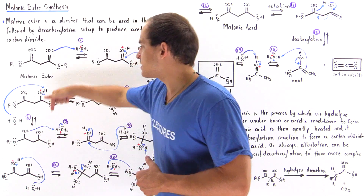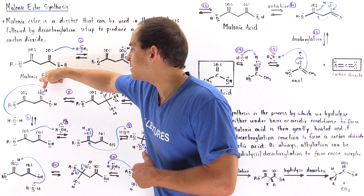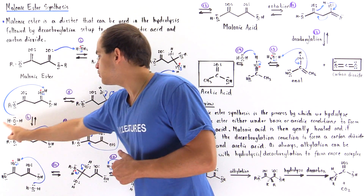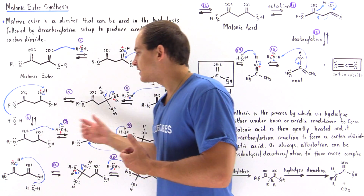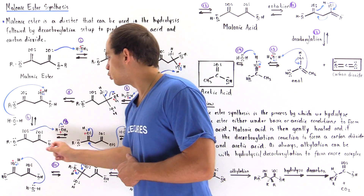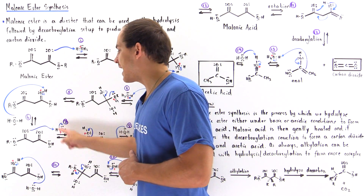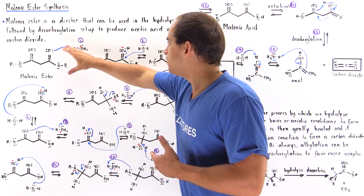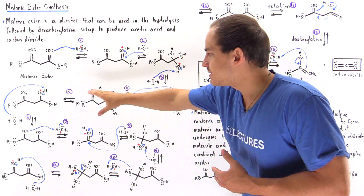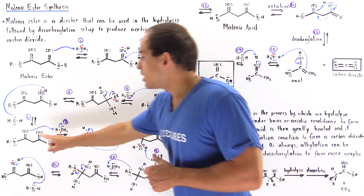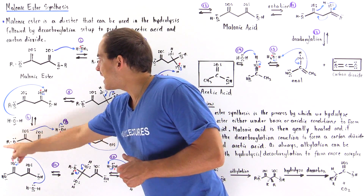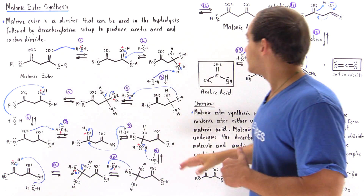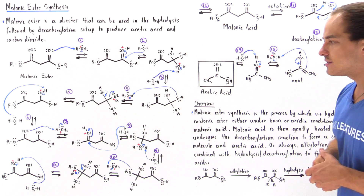In step six, if we deprotonate this H using water, we produce a molecule that contains one ester group and one carboxylic acid group. If we repeat the same six steps but now apply them to this ester instead, we produce our malonic acid.